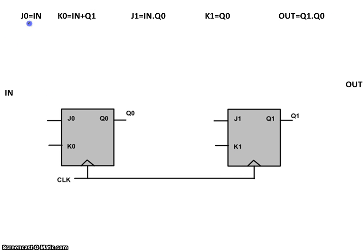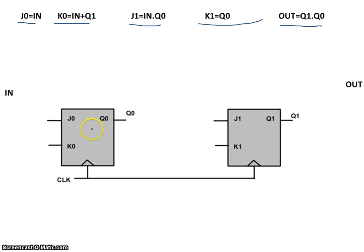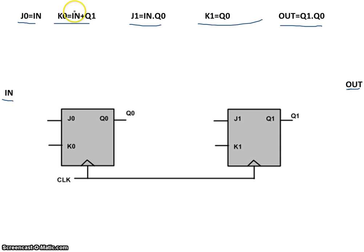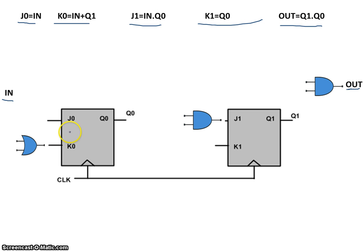Here are our Boolean expressions for j0, k0, j1, k1, and the final output q1, q0. Here's the first JK flip-flop and second flip-flop connected to a common clock. We have our input and our system output right here. For this, we have one OR gate, one AND gate, and a second AND gate.